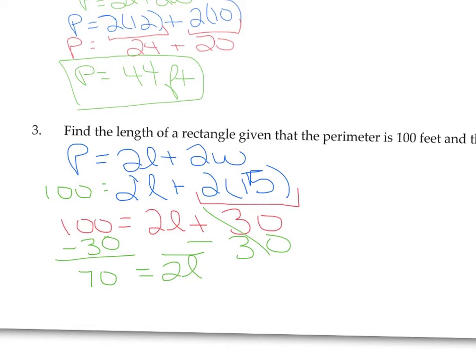And then to isolate this L, we have to divide off as 2. So divide by 2, and we get L equals 35. So the length of this rectangle is 35, and the units are feet for this question.